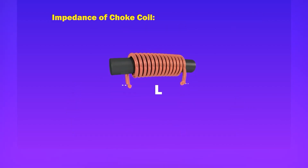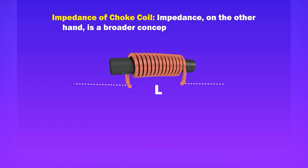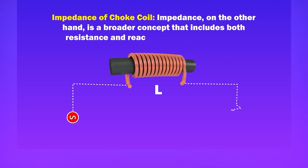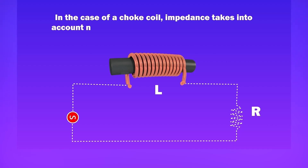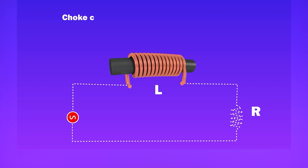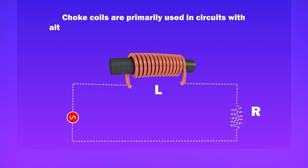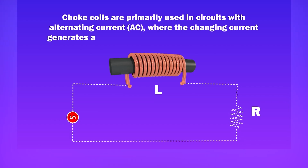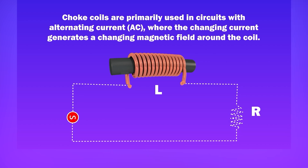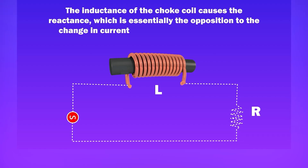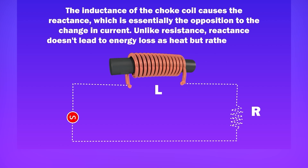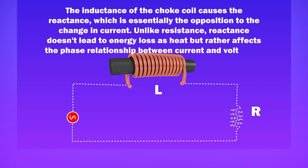Impedance of Choke Coil: Impedance, on the other hand, is a broader concept that includes both resistance and reactance — the opposition to alternating current. In the case of a choke coil, impedance takes into account not only the resistance of the coil but also the reactance due to its inductance. Choke coils are primarily used in AC circuits where the changing current generates a changing magnetic field around the coil. The inductance of the choke coil causes the reactance, which is the opposition to the change in current. Unlike resistance, reactance does not lead to energy loss as heat but rather affects the phase relationship between current and voltage in the circuit.